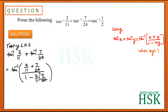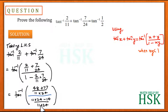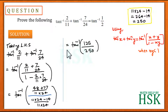Taking the LCM of the numerator, the LCM is 11 × 24, giving 48 + 77 in the numerator. In the denominator, solving the two terms gives 24 × 11 − 2 × 7, that is 14. These two common values in numerator and denominator cancel out, leaving 125 in the numerator and 11 × 24 − 14 = 264 − 14 = 250 in the denominator.